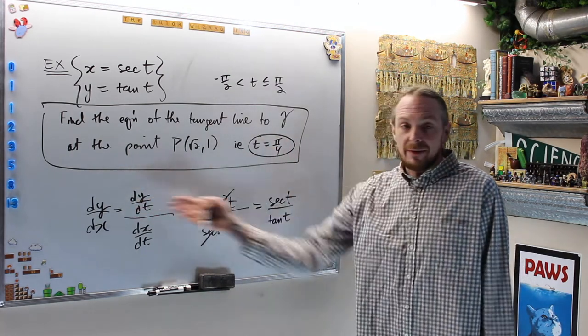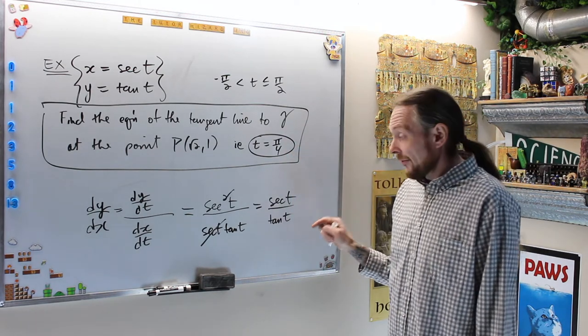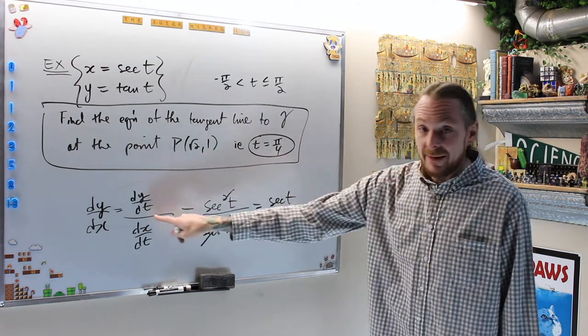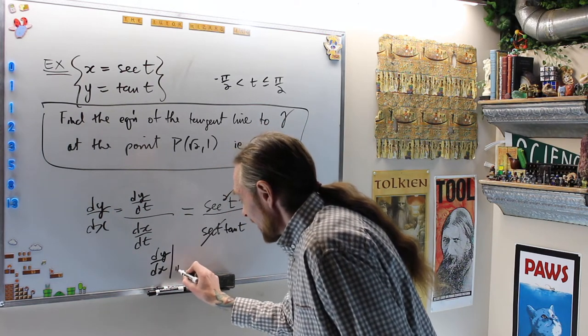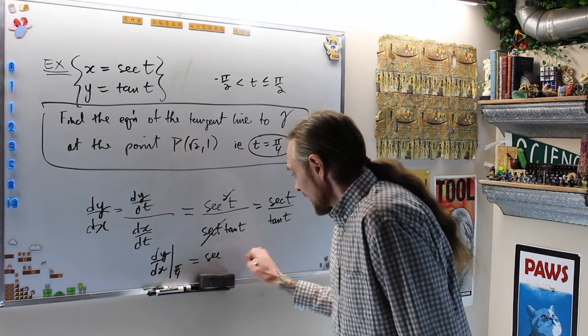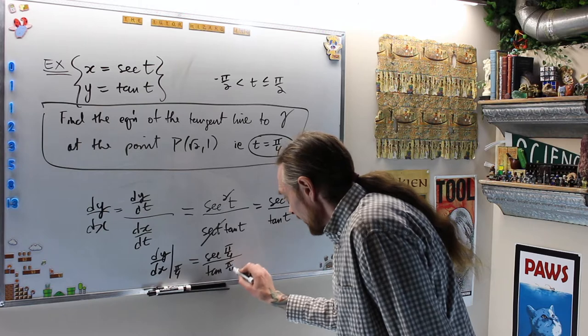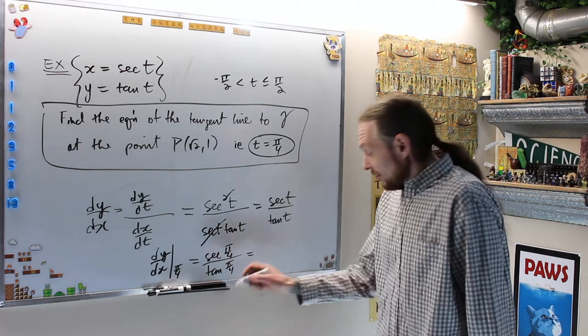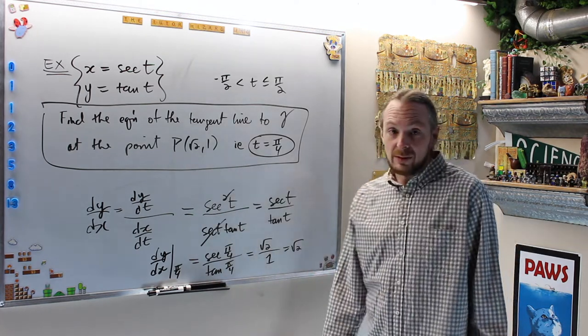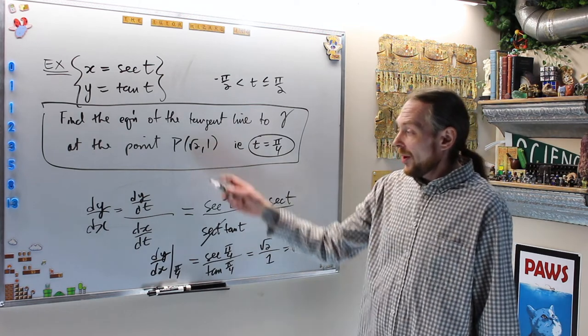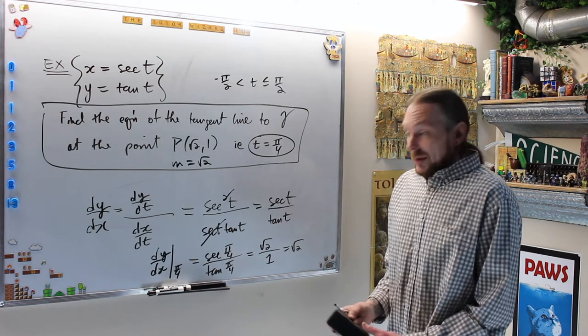What do I get now? They gave us, now I have the derivative at every point or at every parameter value. Now it told me the parameter value was t equals π/4. And I have a point where that happens, and I don't have a slope, and then I build a line. So that says dy/dx evaluated at π/4 is equal to secant of π/4 over tan of π/4.